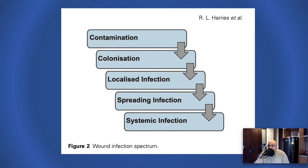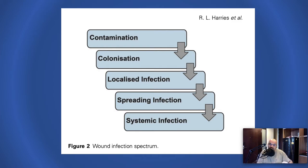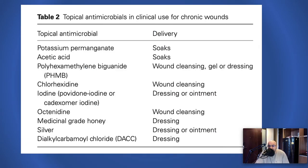When bacteria start to accumulate and get stuck in the wound, that is infection. In Wound Bed Preparation, there are five levels of microorganism presence in a wound: contamination, colonization, localized infection, spreading infection, and systemic infection. Only in the last two phases — spreading and systemic infection — does it become applicable to give the patient systemic antibiotics. Before that, there is no real benefit in exposing the patient's entire system to systemic antibiotics.